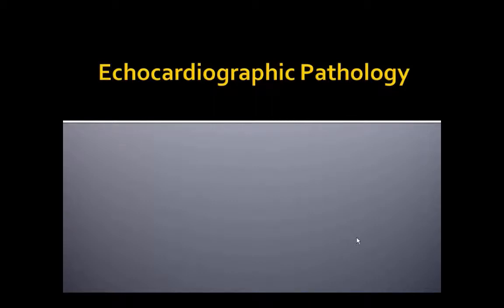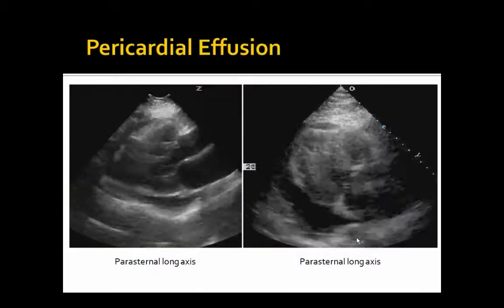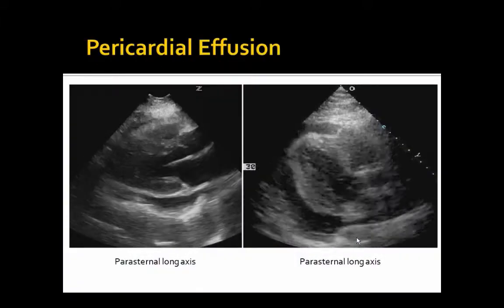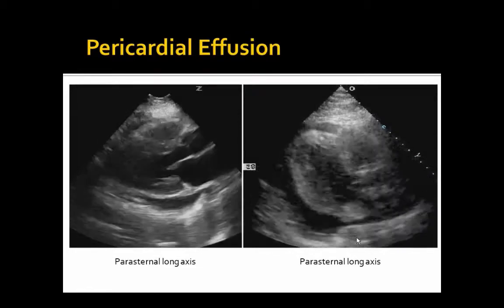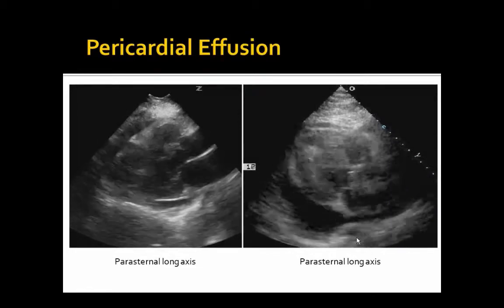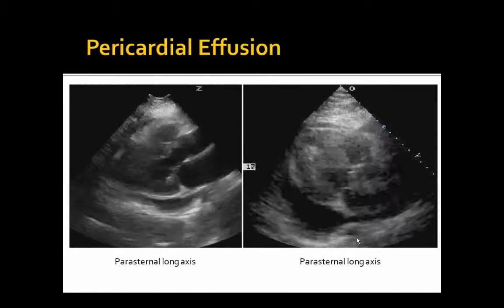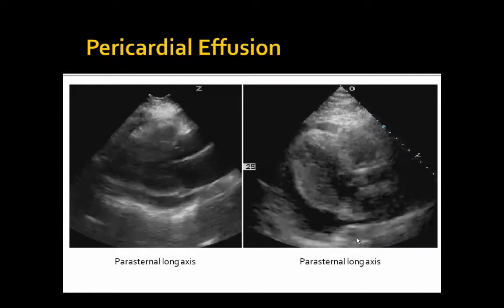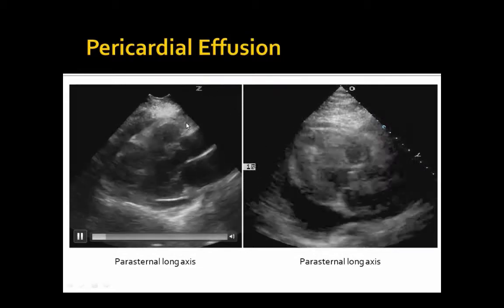Let's get into the pathology. First off, pericardial effusion. Pericardial effusions, especially in more acute settings, are going to look black. Remember on ultrasound, fluid is typically black, and pericardial effusions are usually made up of fluid.